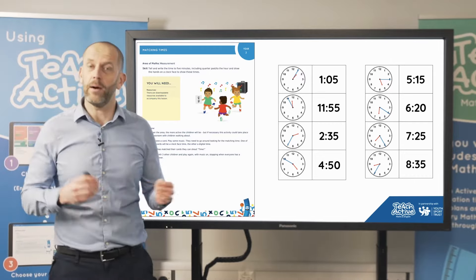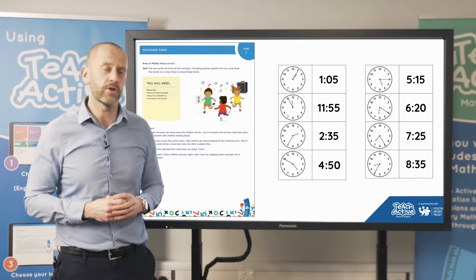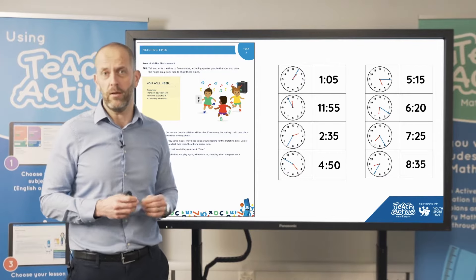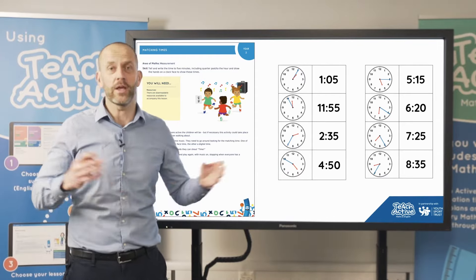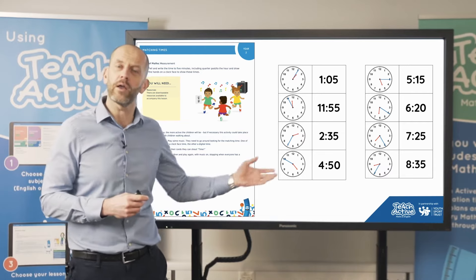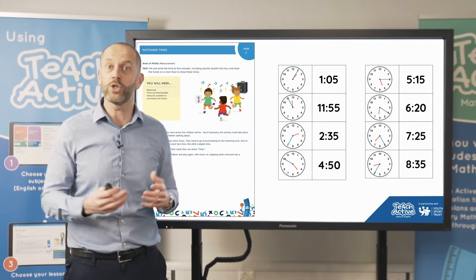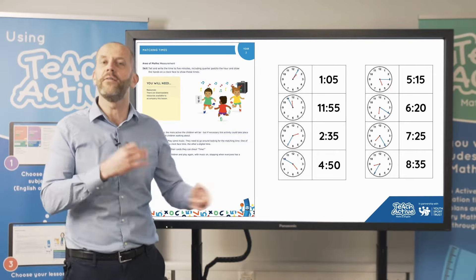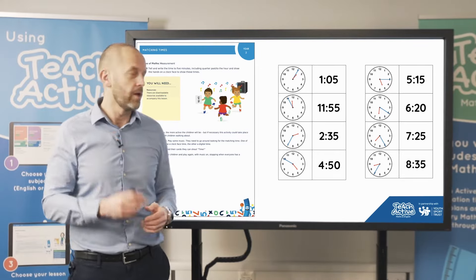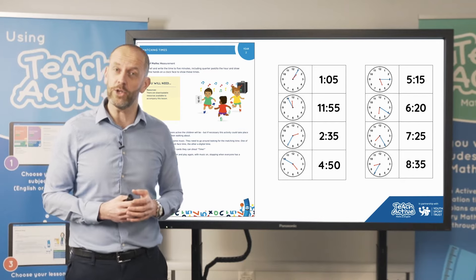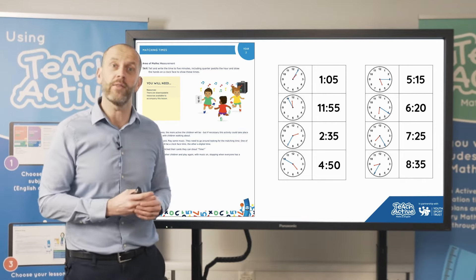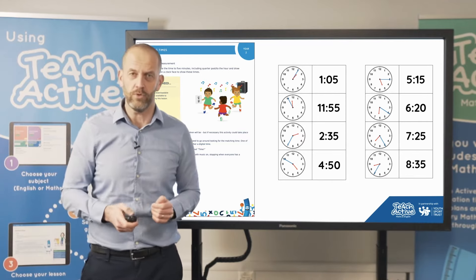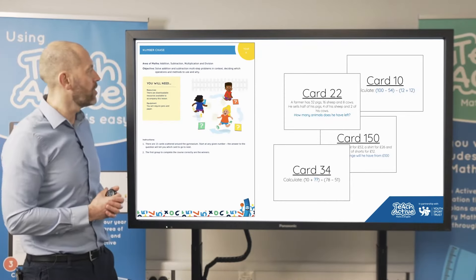This lesson plan is about matching digital and analogue clocks. Everything is here — we give all the children one of the resources, they move around the room and on the command go and find their partner. There are great opportunities for maths chat, number talks, and reasoning, then we can swap cards and go again. It can also be used for an intervention programme — for example, having children run and collect the cards and match them up.